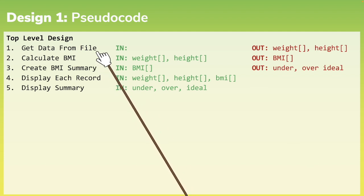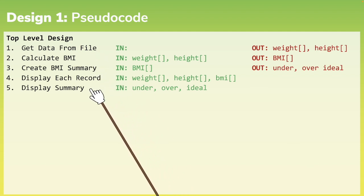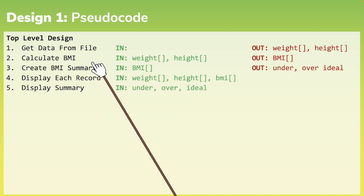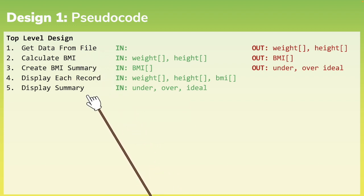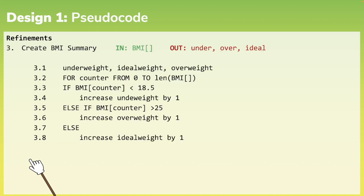Once we have got our top level design, we can think about refining each of these main steps and specifying how exactly we would do them. For example, here we have the refinements for step one, getDataFromFile. And here we have the refinements for step three, Create BMI Summary.